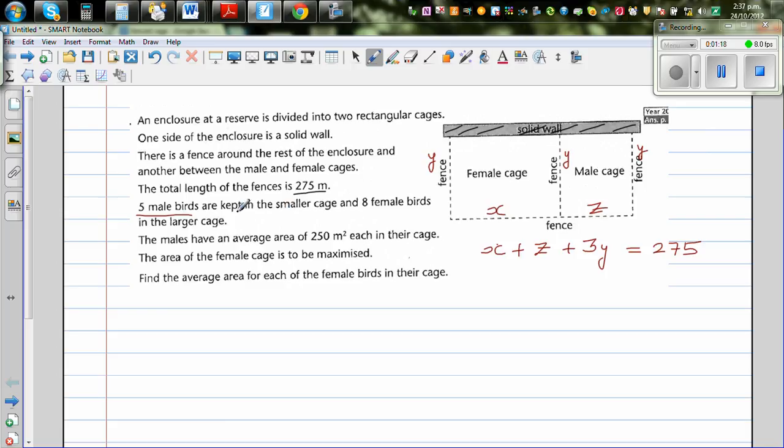Five males are kept in the smaller cage. This is the male cage and eight female birds in the larger cage. So you got five here and eight females.